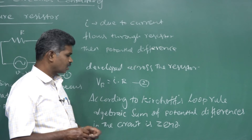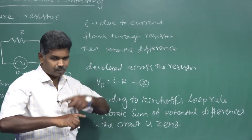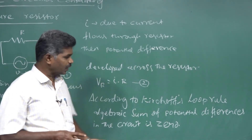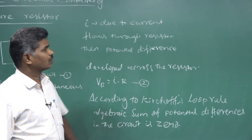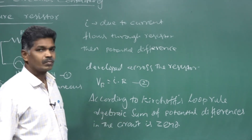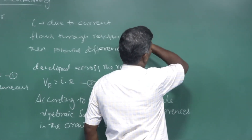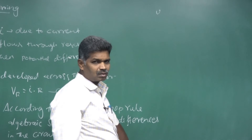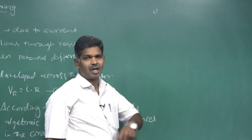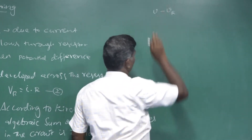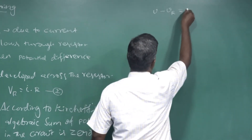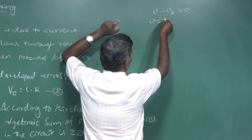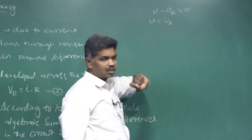According to Kirchhoff's loop rule, the algebraic sum of potential differences in a closed circuit is zero. Because it is a complete circuit, at any point there is no net potential difference. So we express that: the instantaneous EMF V plus the voltage developed across the resistor, which is in opposite polarity, gives V minus VR = 0. From this: V = VR.